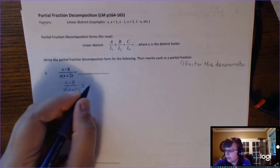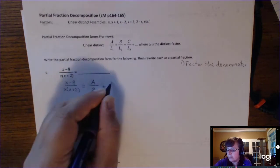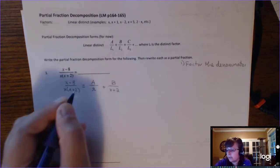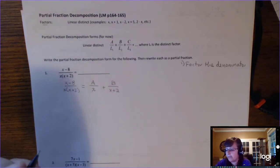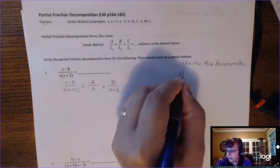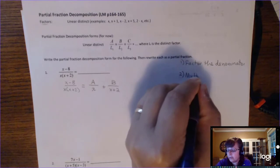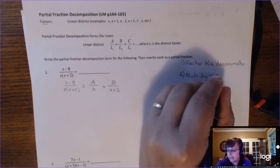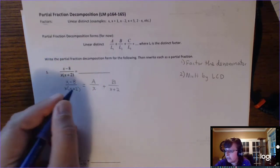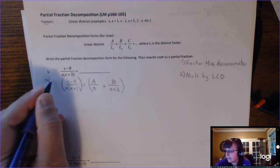You're going to put some number A over one of the factors, x, plus another number B over the other factor, x plus 2. If there were a third factor, you'd put plus C over that factor. So we have this equation. Step two, after you factor and write the equation, you're going to multiply both sides of the equation by the LCD. We've done this before when we solved rational equations.